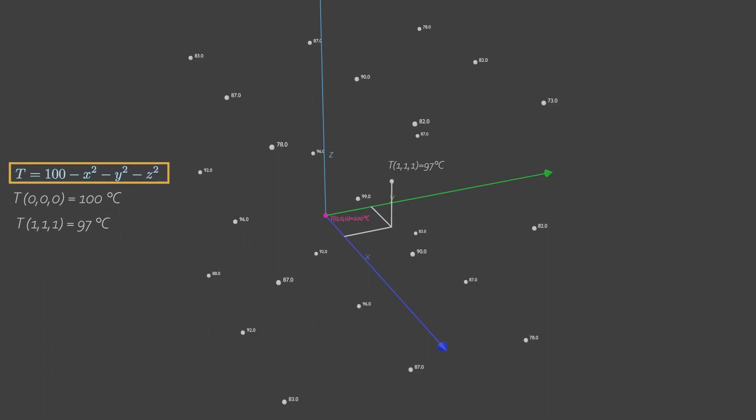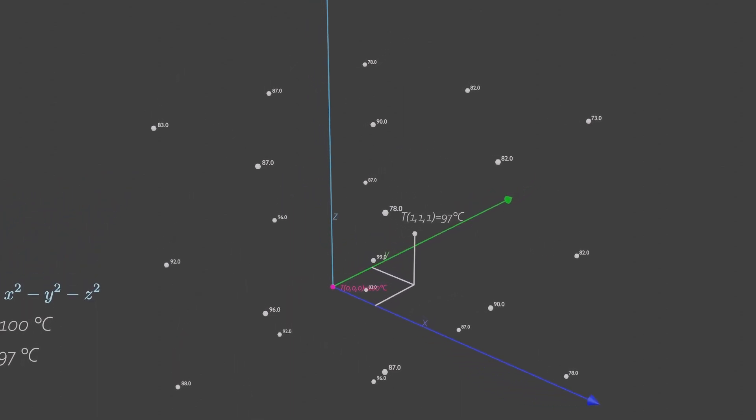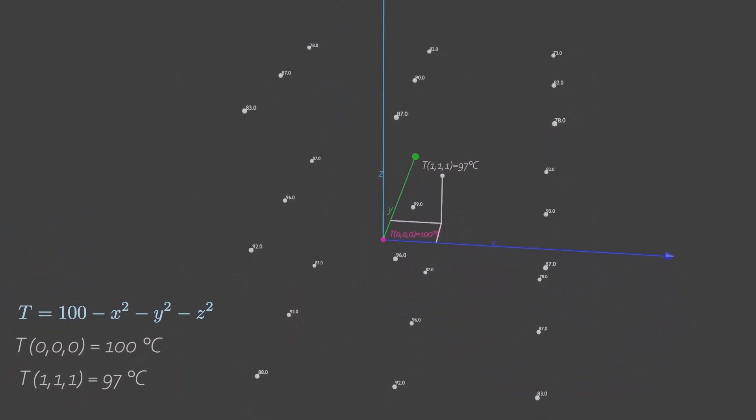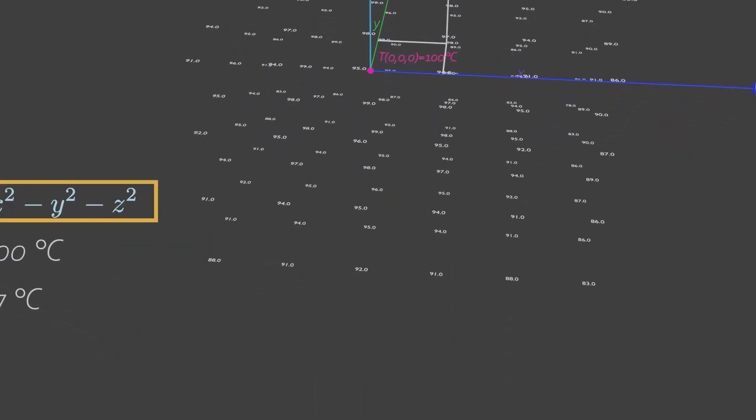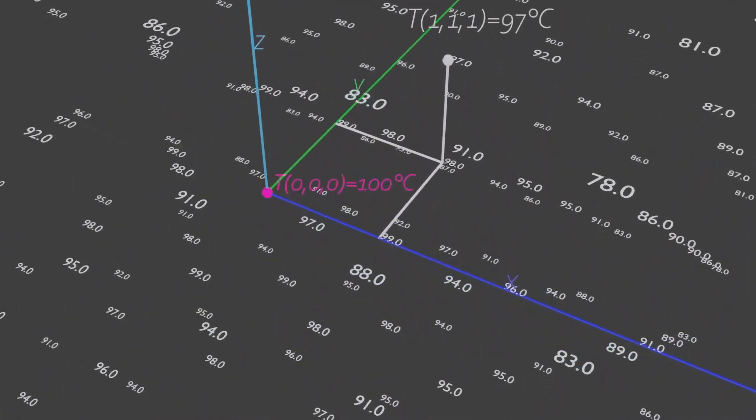Let us generate some temperature readings on some of the points. You will notice that the maximum temperature is found to be at the origin. Generate as many temperatures as you can, the result is same. Maximum temperature is found only at origin.